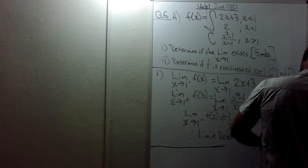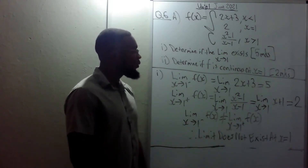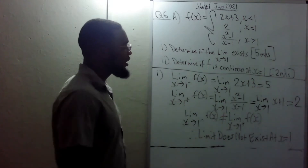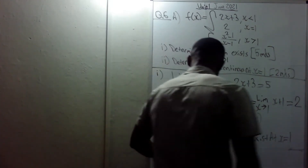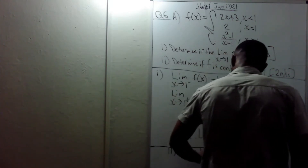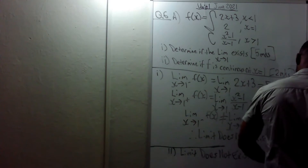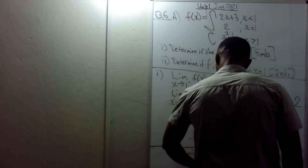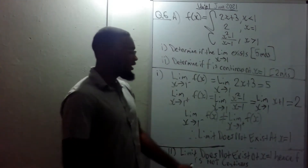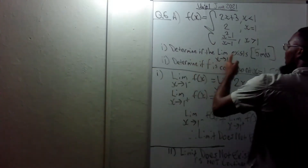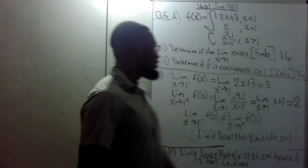The limit does not exist at x equals one — that's five marks. For part two, determine if f is continuous at x equals one. Since the limit does not exist, hence f is not continuous at that point. So: does the limit exist? No. Is it continuous? No.